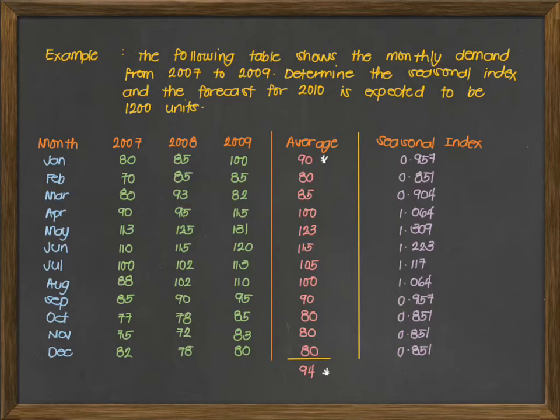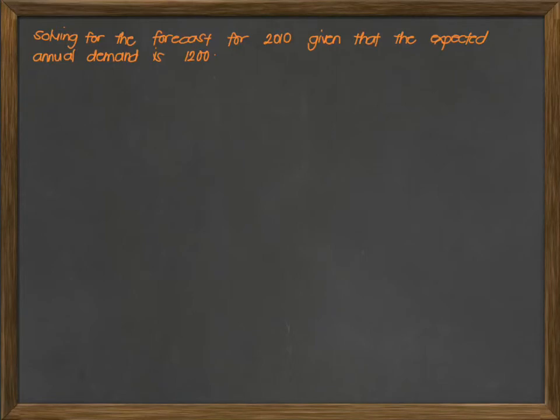Once we are done with our seasonal index, we can now proceed with the solution of forecast for any given condition. Now, solving for the forecast for 2010, given that the expected annual demand is 1,200. As stated in our fifth step, it just states that kung ano yung season ng ating data, dapat kapag tayo ay nago-forecast, it should be of the same season as well. Now, if our expected demand is given in a time basis na iba doon sa season, which in this case, in annual form, we have to convert the annual demand into monthly demand before we can actually forecast for each month.